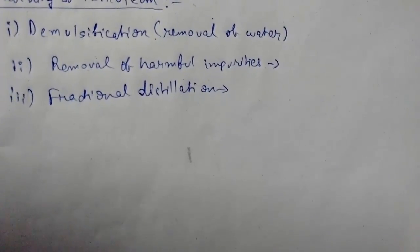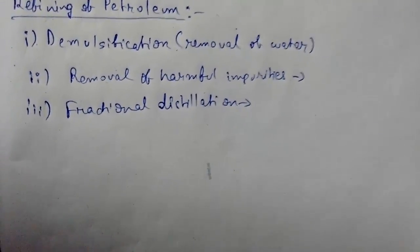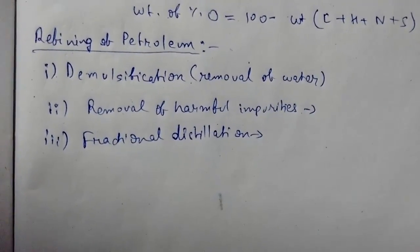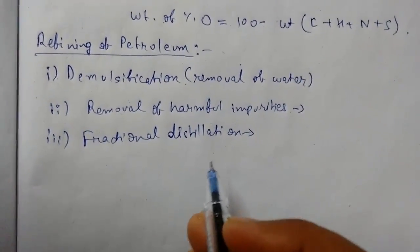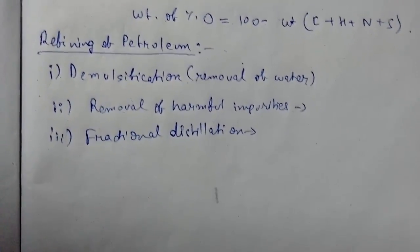Higher boiling point fractions condense first followed by lower boiling point fractions. These were the refining processes of petroleum. The fractional distillation will be discussed in the next video. Thanks for watching.